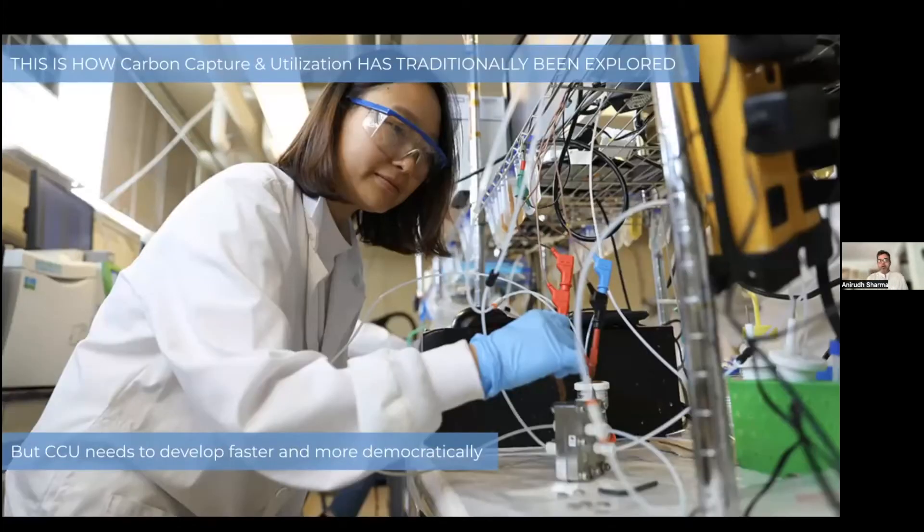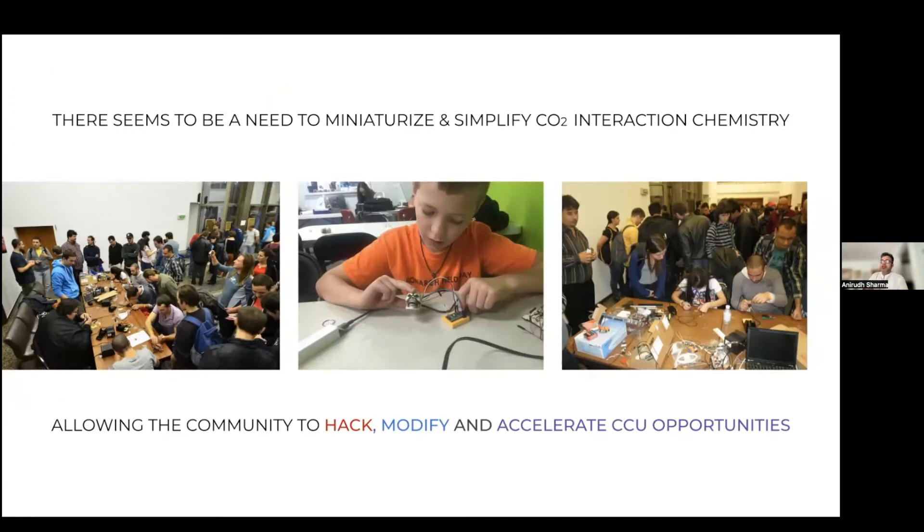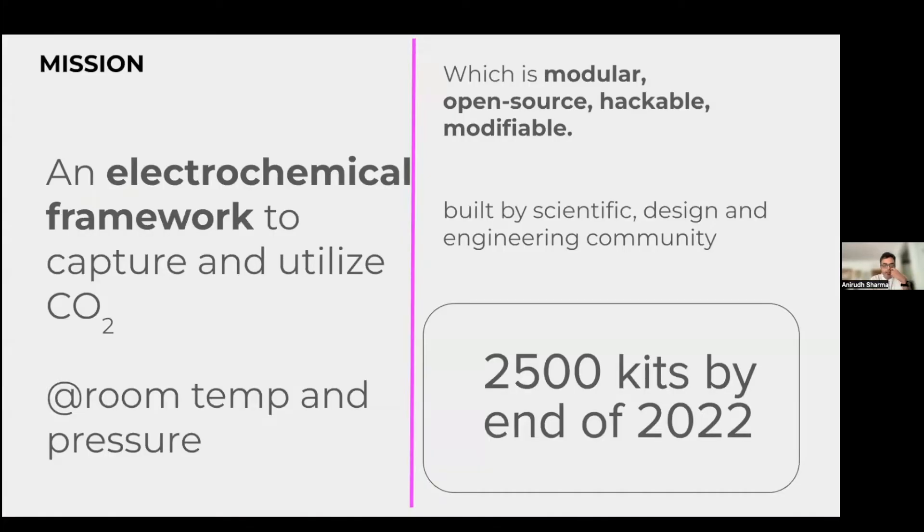Coming back to carbon capture, this is what a lab in electrochemistry or carbon capture would look like. They're expensive, complex, because most technologies in carbon capture are around high temperatures and pressures. The interesting thing is right now, electrochemistry has reached a point that it's possible to look at carbon capture from room temperature and pressure scales. What we're planning is to simplify all of that so not just scientists, but kids, high schoolers, community participants, makerspaces can get involved in carbon capture from a doing perspective.